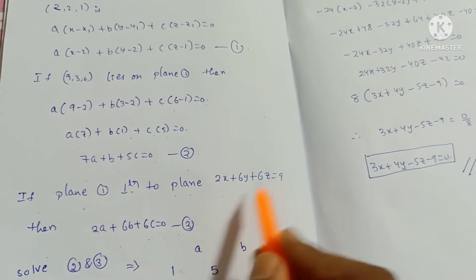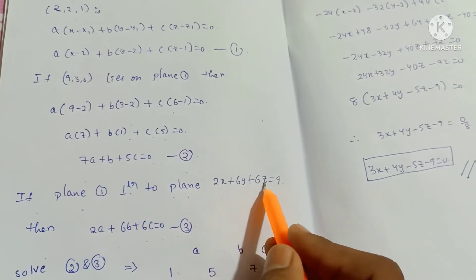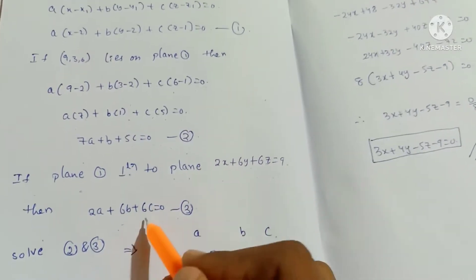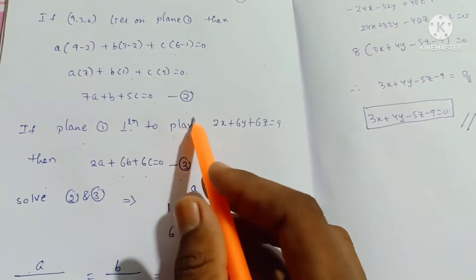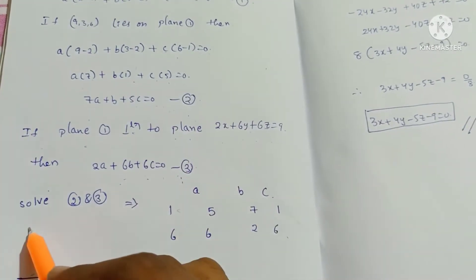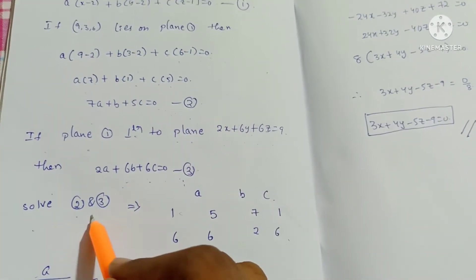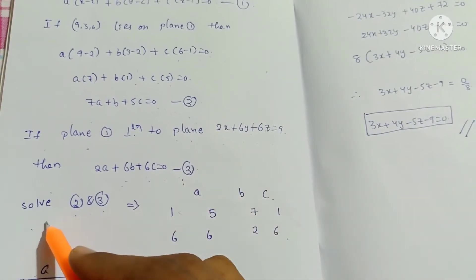Since the plane is perpendicular to 2x plus 6y plus 6z equals 9, the normal of that plane gives us: 2a plus 6b plus 6c is equal to 0. This is equation 3. We will now solve equations 2 and 3.